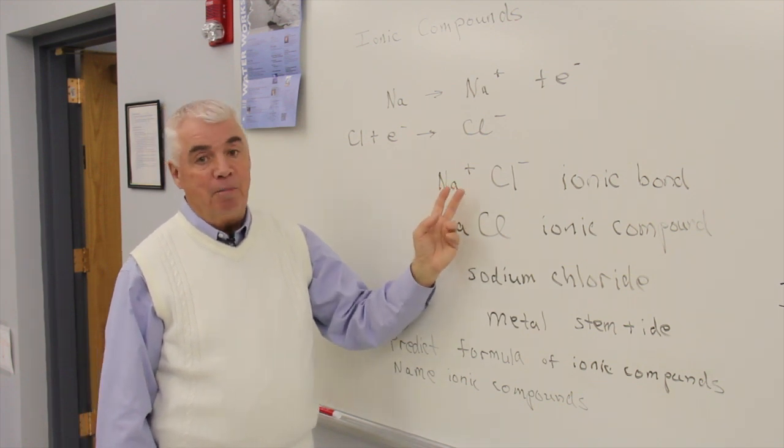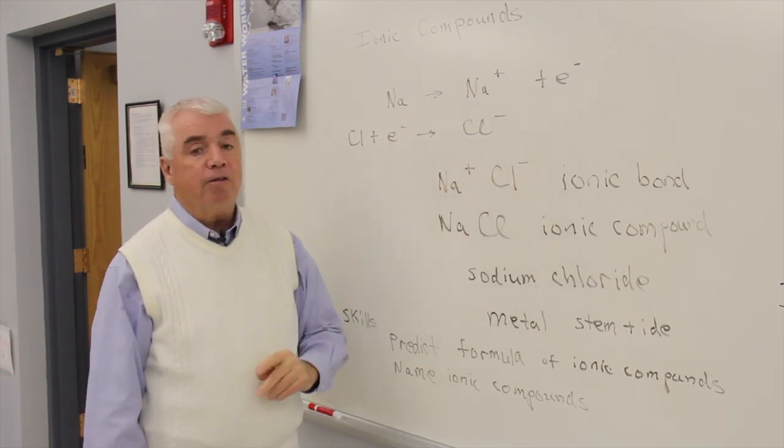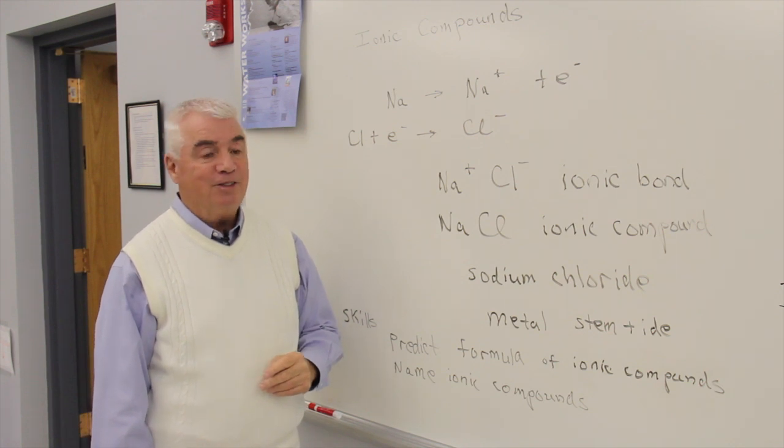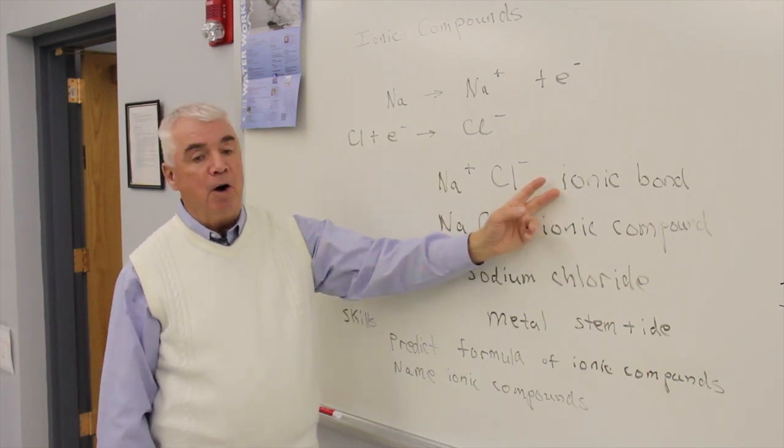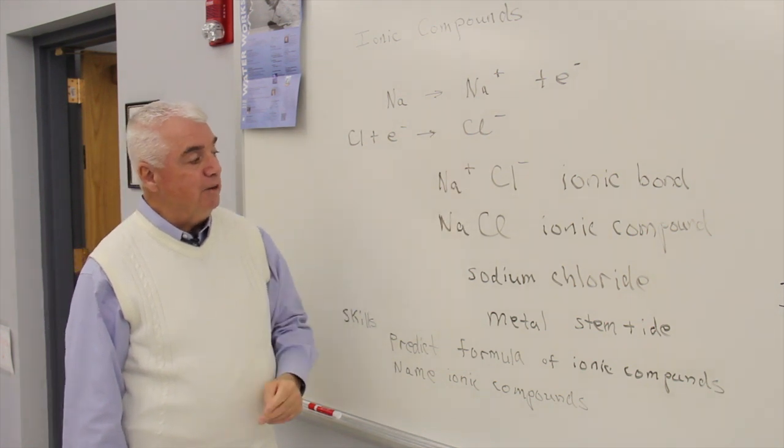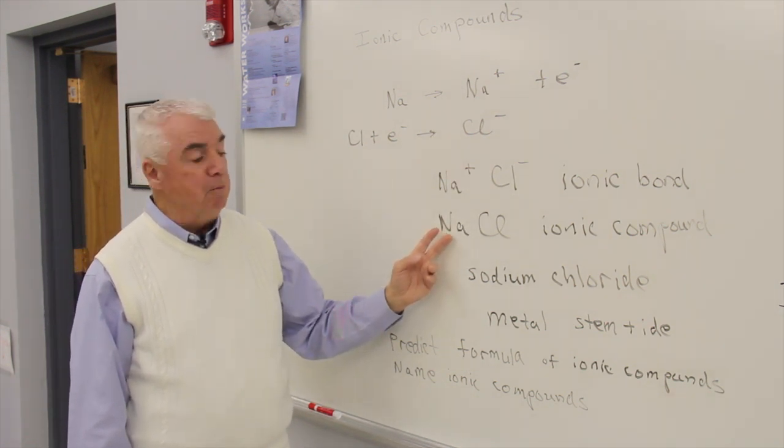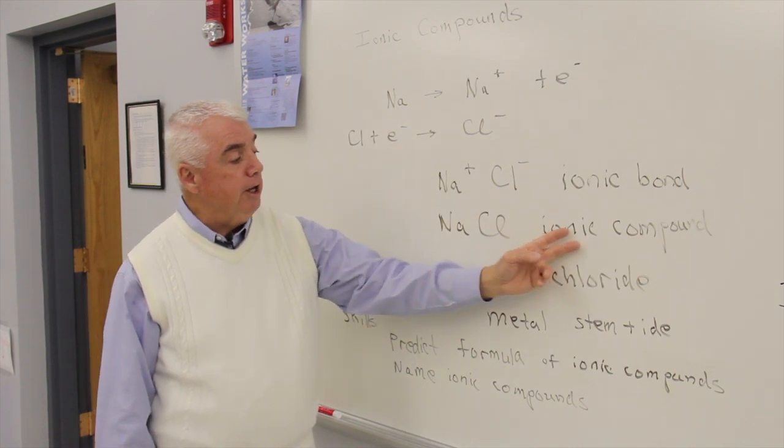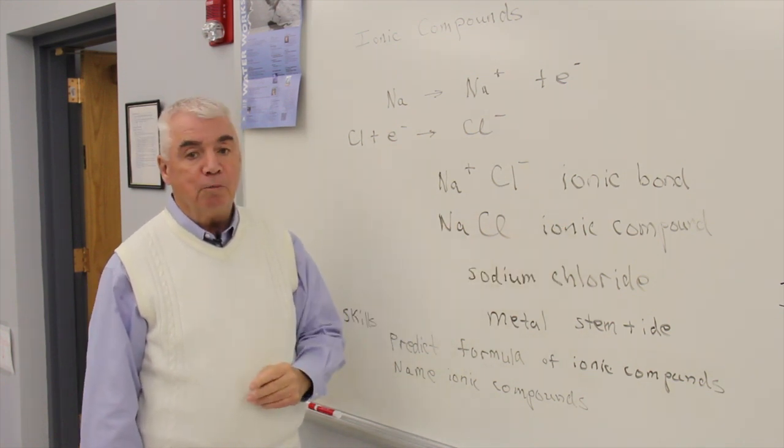The attraction is called a bond, and the attraction of oppositely charged ions is called an ionic bond. And if we omit the charges and simply write the formula of the compound, then we have an ionic compound, sodium chloride.